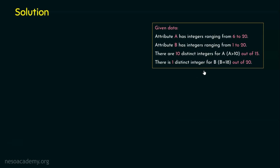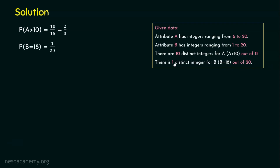Let's take the given data to a new slide for easier solving. The condition is A greater than 10 OR B equal to 18 OR both. We'll use the probability approach. Probability of A greater than 10 is 10/15, which equals 2/3. Probability of B equal to 18 is 1/20. Since A and B are independently distributed, the probability of both occurring together is 2/3 multiplied by 1/20, which equals 1/30.